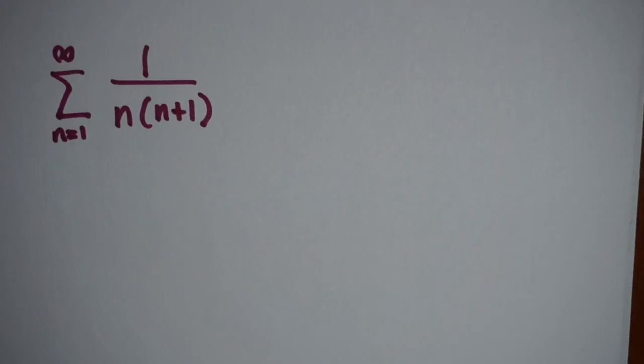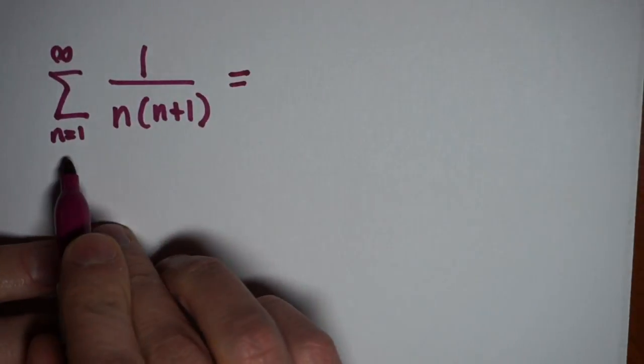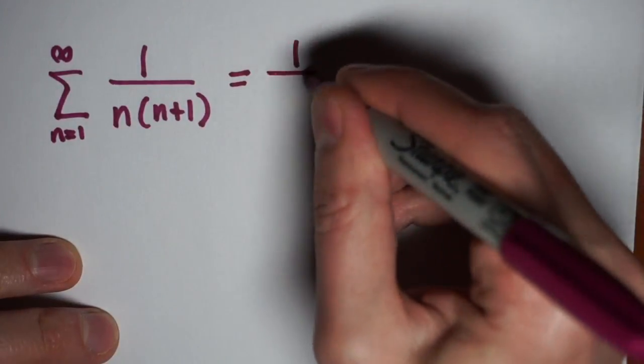We're going to look at the series when n goes from 1 to infinity of 1 over n times n plus 1, and we would like to determine what it converges to and that it converges.